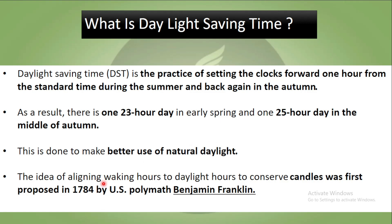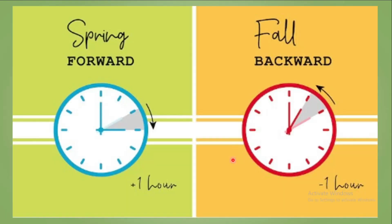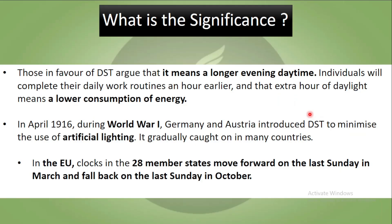This is done so that they can better use the natural daylight. Firstly, in 1974 this method was proposed by Benjamin Franklin to conserve the candles used at homes. In spring, the clock is set one hour forward, and again in autumn it is set back.